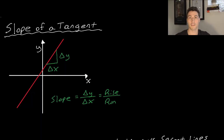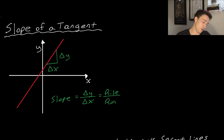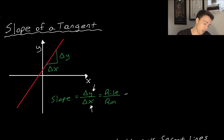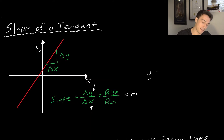Before we go into what the slope of a tangent line is, let's first talk about what slope is. Slope, from grade 9 and grade 10 math, is just rise over run — the change in the y variable over the change in the x variable. We could also say this equals m, as in y = mx + b. So that's what slope is.